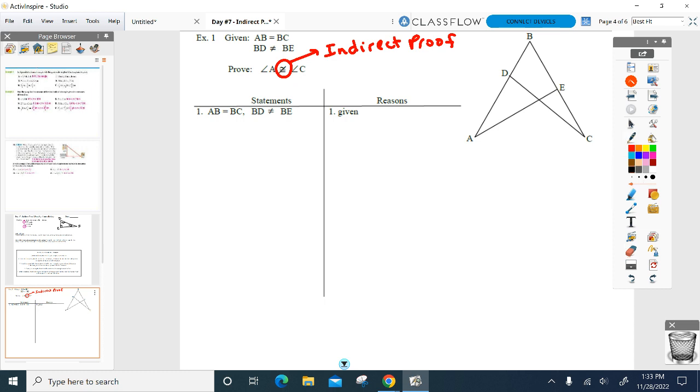Statement one, reason one. Anything change there? We still got to write our givens in. You're welcome. They're already there. Still got to write them in. Also, just a quick note about the givens. They're always true. They're always true. They're never false. You use all of them, right? The givens are always true.